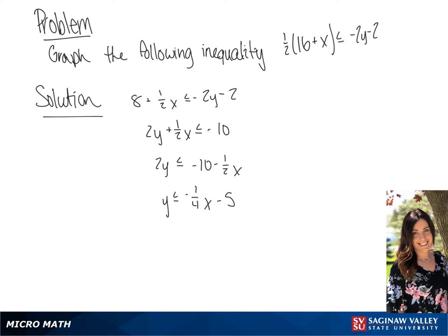And this gives us two pieces of information. We have the slope, which is negative 1 over 4, and the y-intercept, which is 0, negative 5, allowing us to graph the inequality.